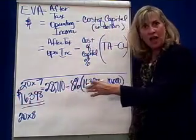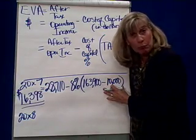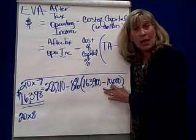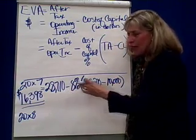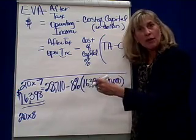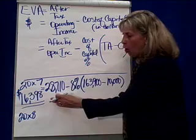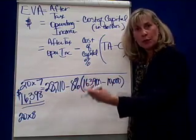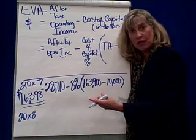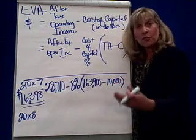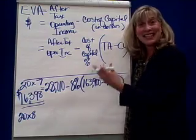Notice the EVA is a dollar amount. Did this manager exceed our expectations? Yes — they exceeded our expectations. We could give them a bonus based on their EVA. We could also compare their contribution to the overall good of the company and their longevity with other managers, because these are their dollar contributions showing they exceeded performance.